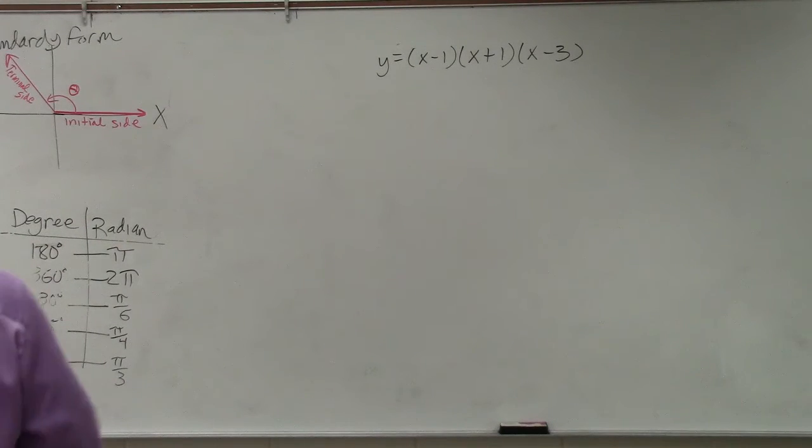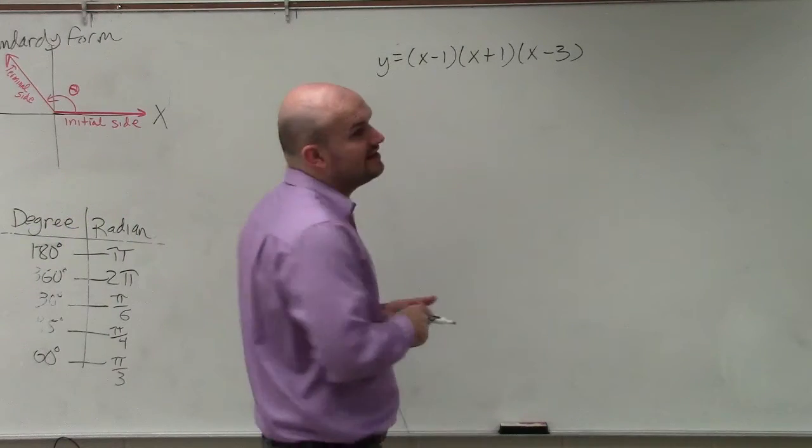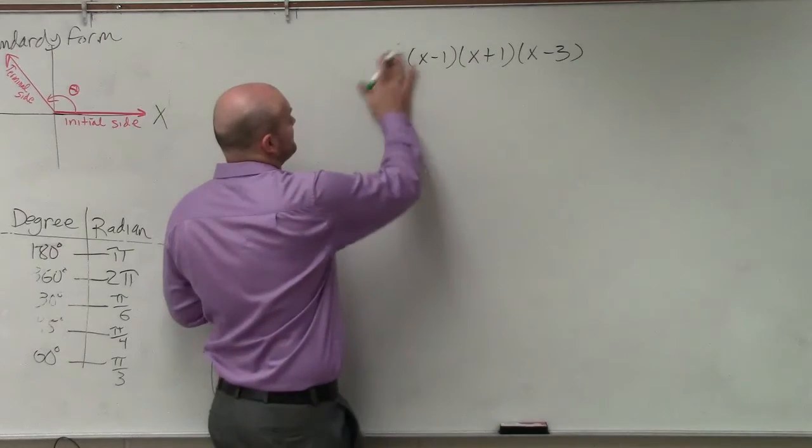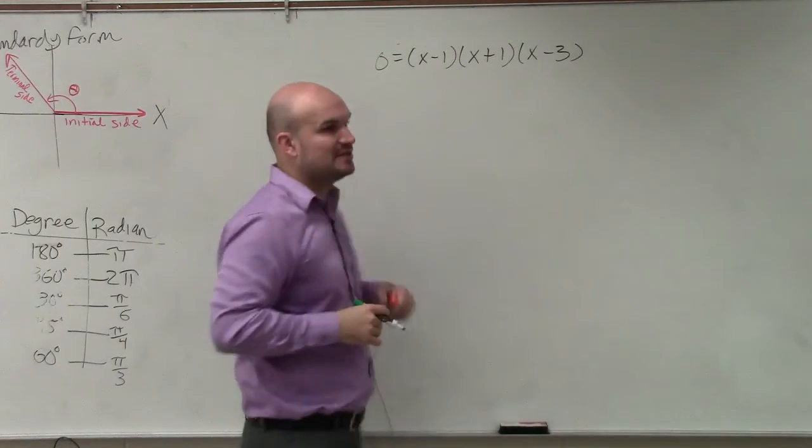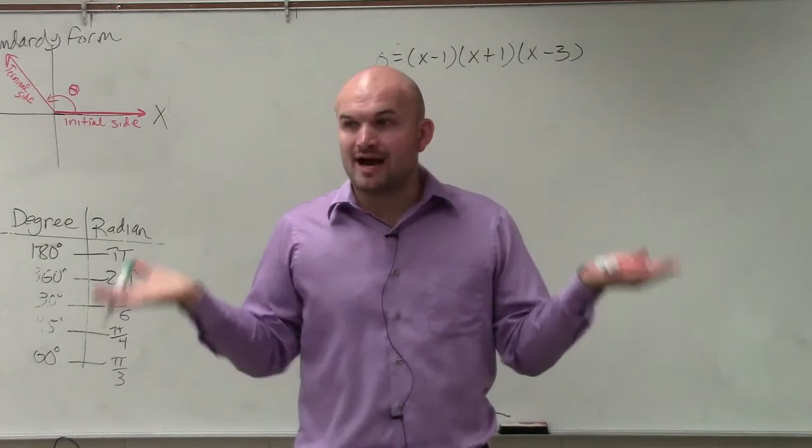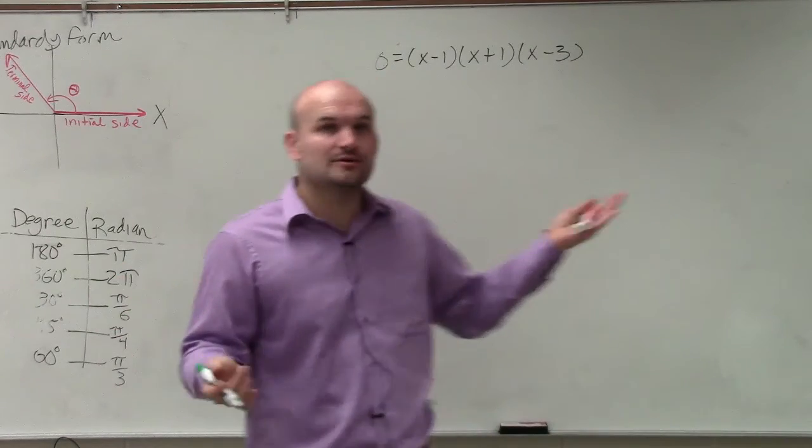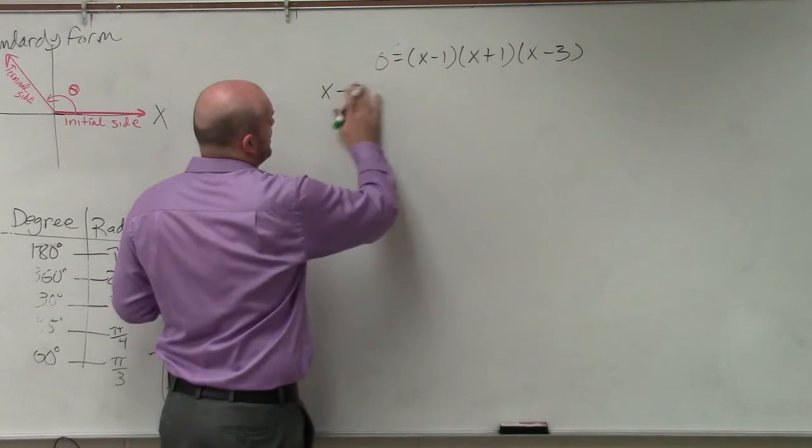Again, they're asking you to find the zeros and then to graph it. Well, again, the easiest thing to do is replace our y with 0. Now I have a factored form set equal to 0. So what I can do is just apply the 0 product property.